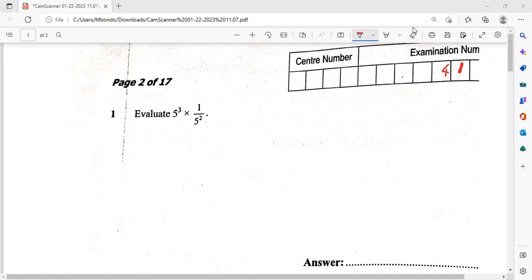Welcome guys, so let us look at this GCE paper for 2022. How do we evaluate this question? In this part we are supposed to expand this 5³, so it is 5 multiplied by 5 multiplied by 5. Then we bring this multiplication here.